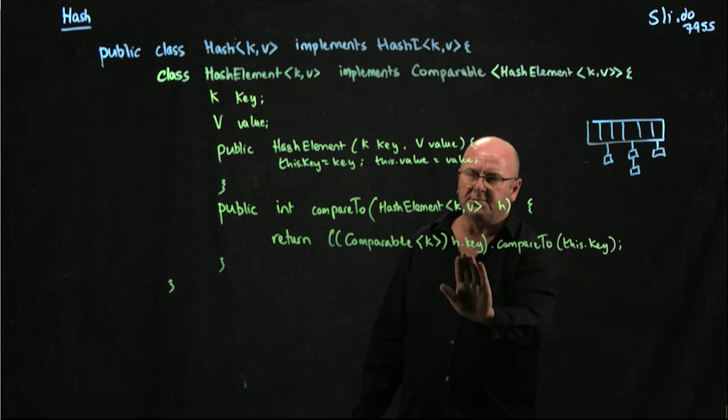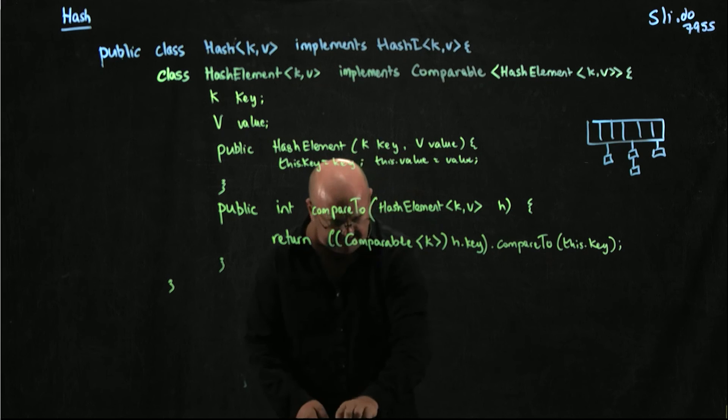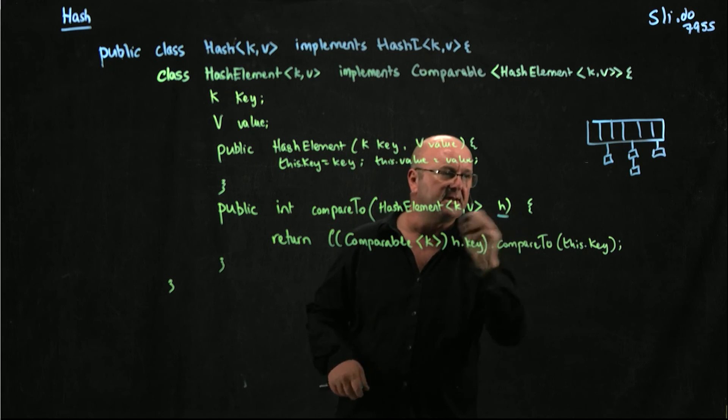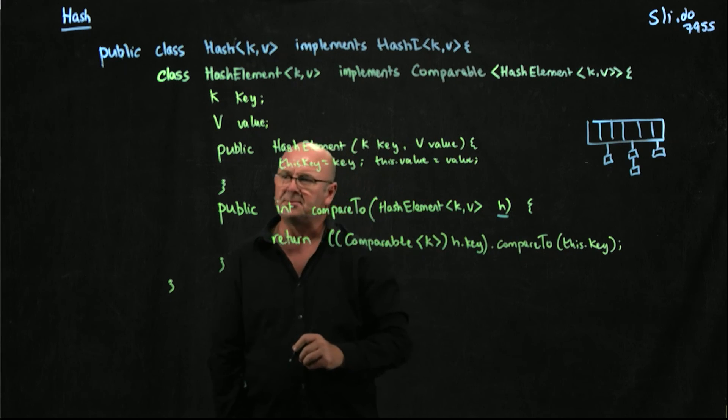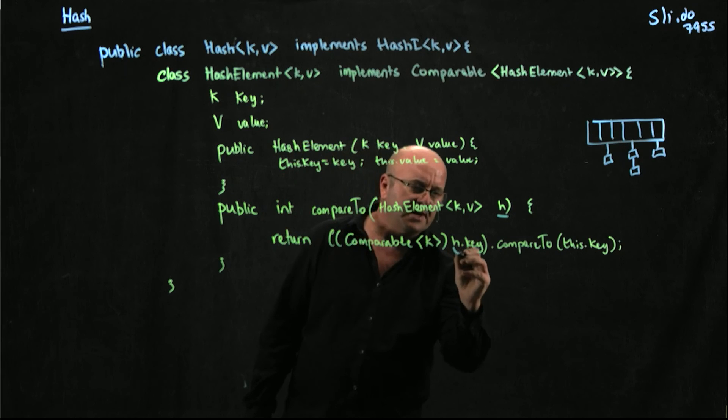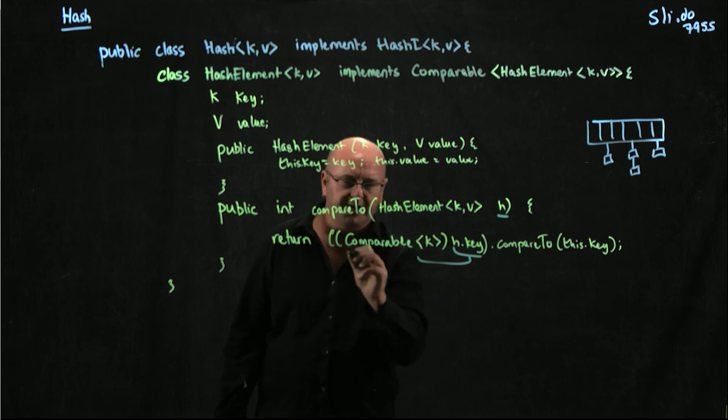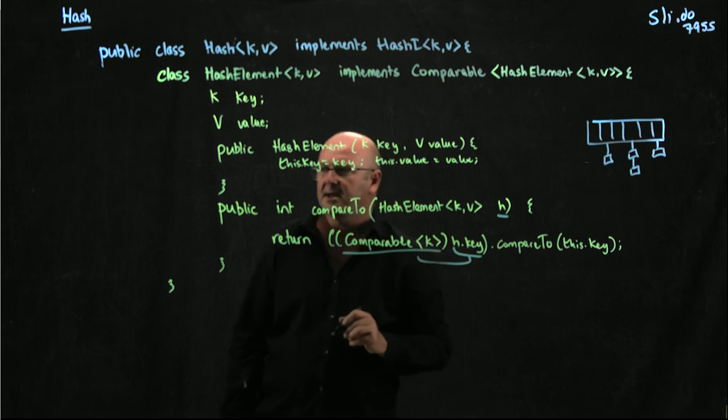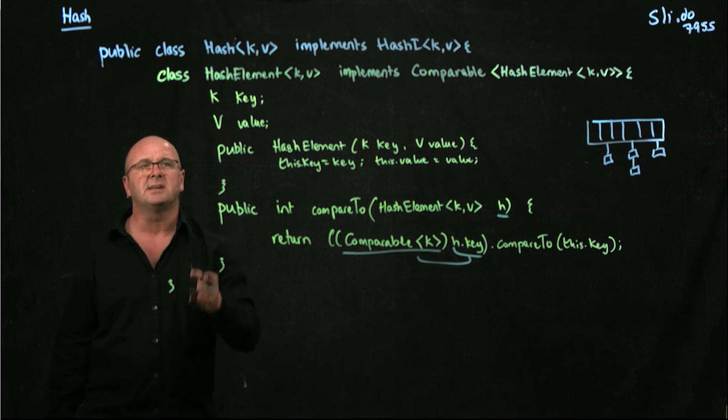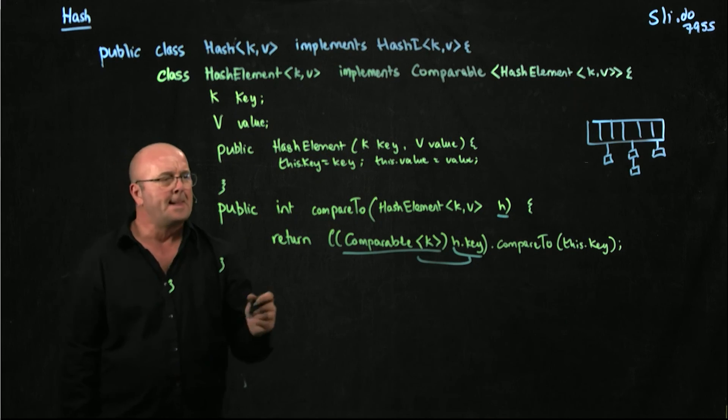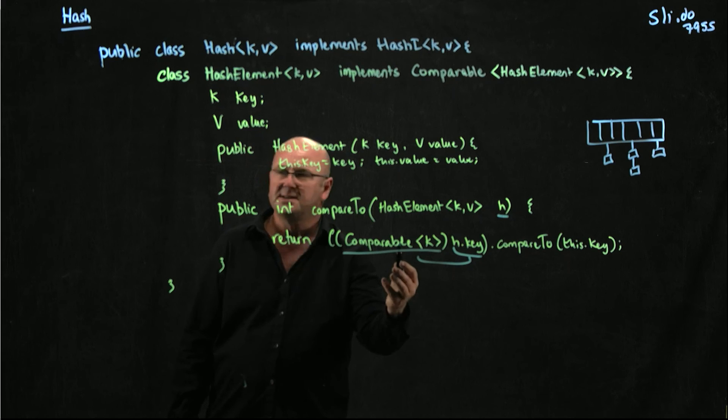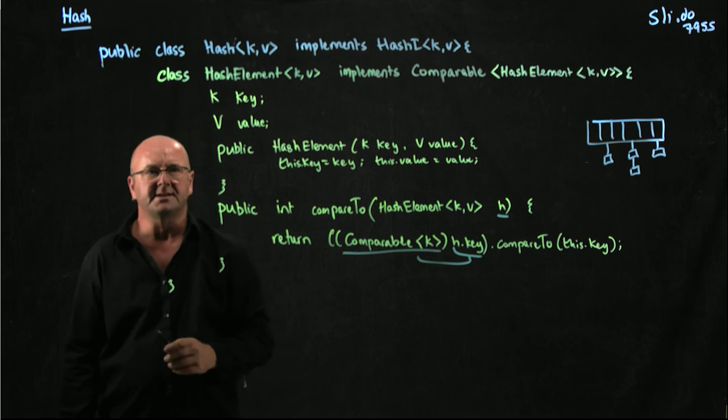So we've got this variable H, which is just a temporary variable. We've cast H.key to be Comparable K. That means that whoever's using our data structure has to implement Comparable of things that are type K.